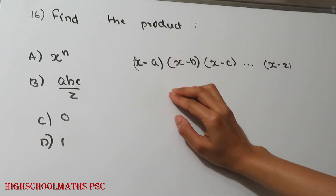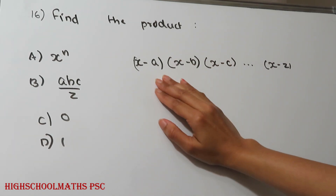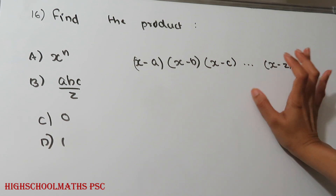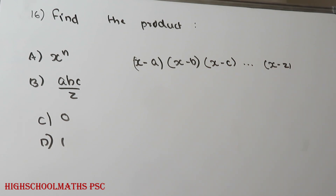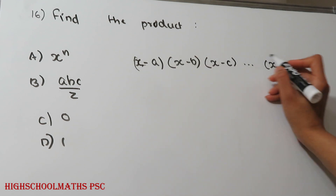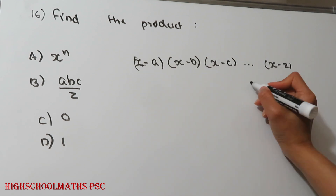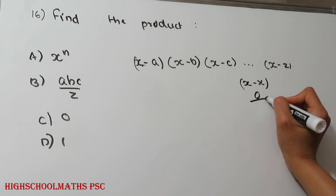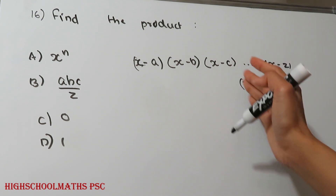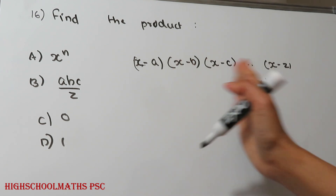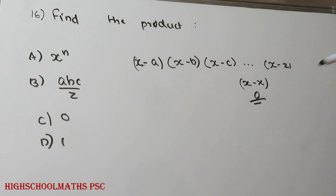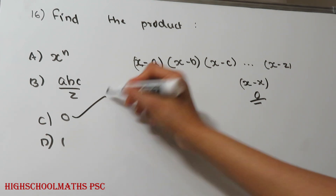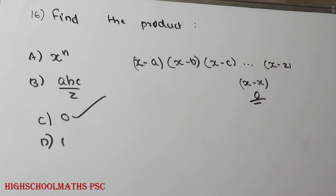Number 16: Find the product of (x minus a)(x minus b)(x minus c)... up to (x minus z), continuing through all letters of the alphabet. Here, when x equals x, the term (x minus x) equals 0. Therefore the entire product is 0. Option D.